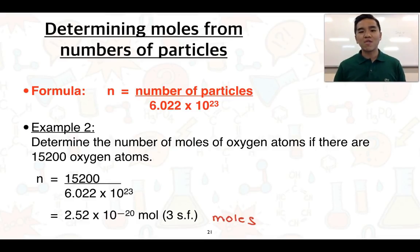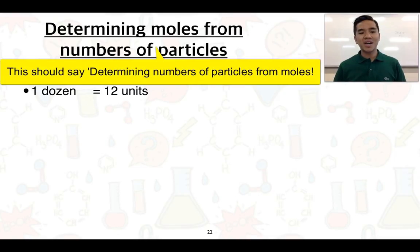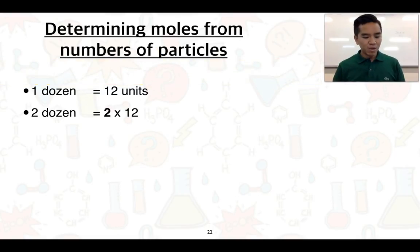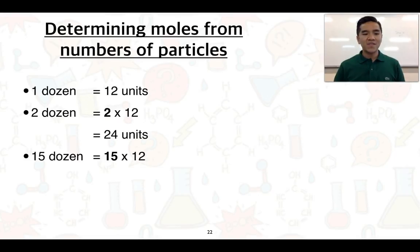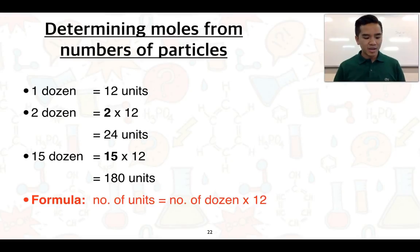Now for the reverse operation — if we're given the number of dozen of a particular object, we know one dozen equals 12 of those objects. Two dozen equals two lots of 12, giving us 24. Fifteen dozen equals 15 times 12, giving us 180 units. From this we can derive a formula: the total number of units equals the number of dozen multiplied by the amount present in one dozen.